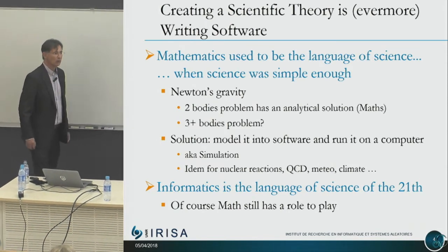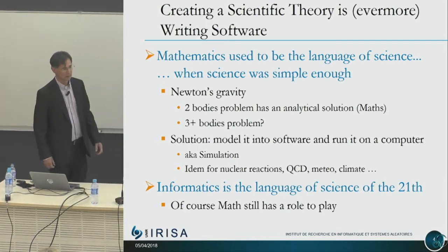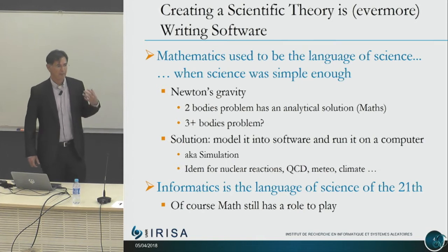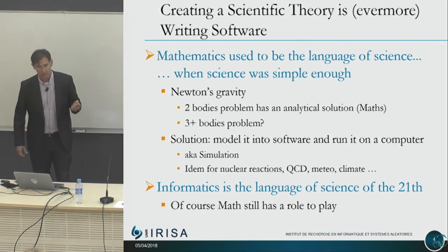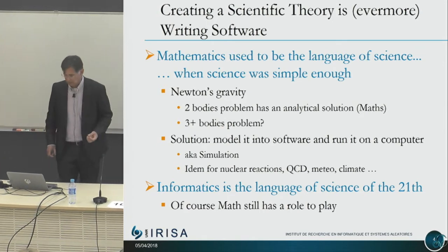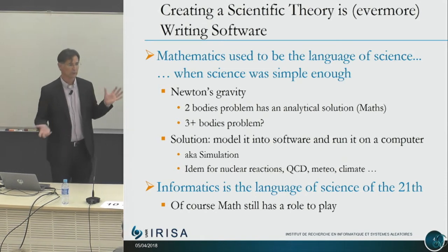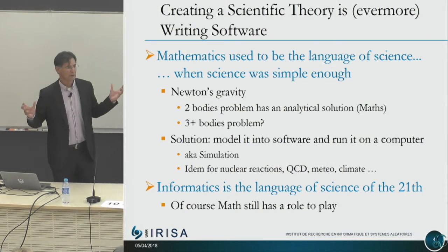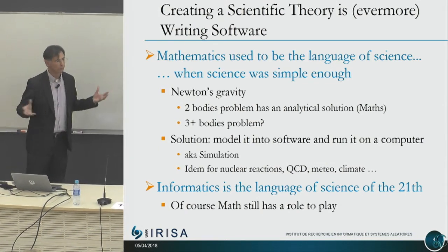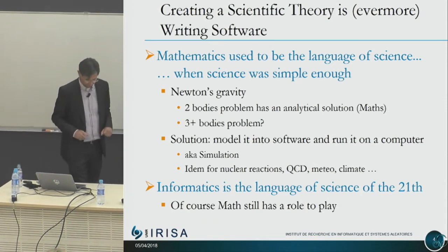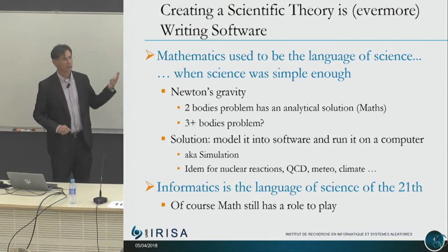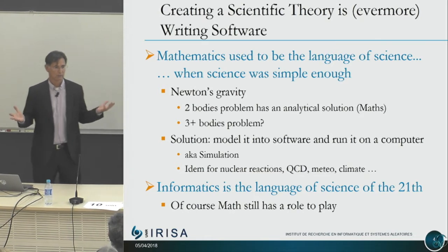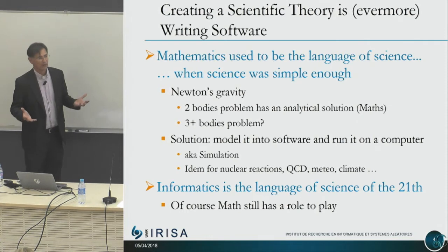My point is that nowadays creating a scientific theory is writing software — even more so, because in the past, up to the 20th century, mathematics used to be the language of science when science was simple enough for math to handle it. Looking at Newton's gravity theory with two bodies, there is an analytical solution that can be produced through mathematics. But as soon as you have a third body, there is no analytical solution. The only way to predict the evolution of a three-body system is actually running a simulation.